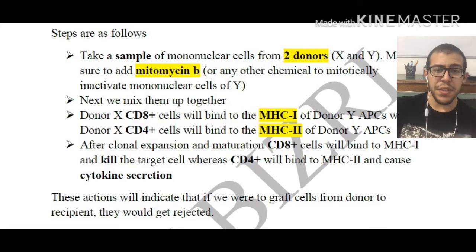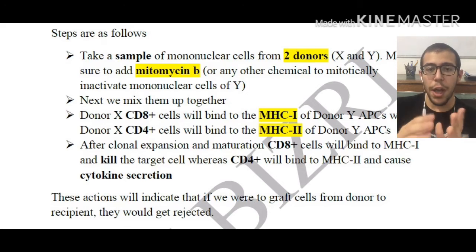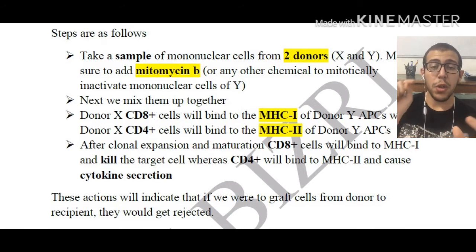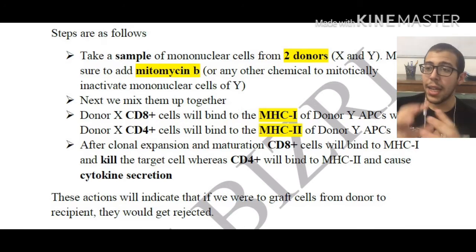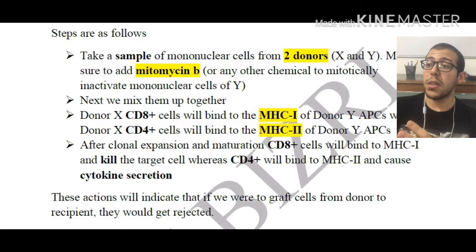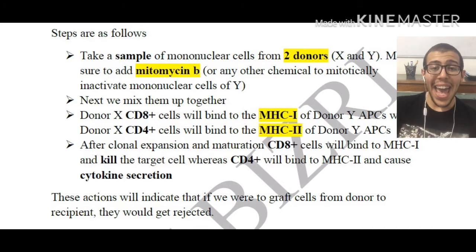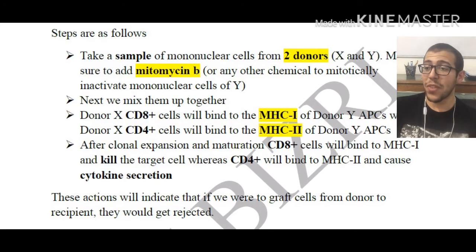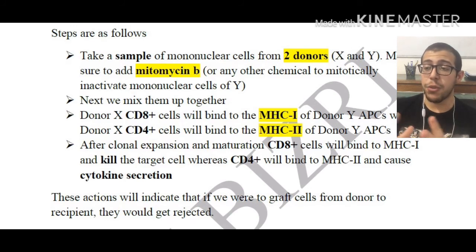After clonal expansion and maturation, the CD8+ cytotoxic T cells are going to be binding to MHC class 1 and killing those cells. The CD4+ T helper cells are going to be binding to MHC class 2 and releasing cytokines, which are going to be leading to many downstream problems that will be discussed in a future video.